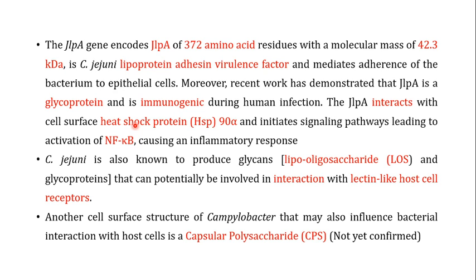Another important virulence factor present in Campylobacter jejuni is JlpA. The jlpA gene encodes a JlpA protein which is 372 amino acid residues long and has a molecular weight of 42.3 kilodaltons. JlpA is a lipoprotein adhesin virulence factor responsible for mediating adherence of the bacterium to epithelial cells. More recently, it has been demonstrated that JlpA is a glycoprotein in nature and is immunogenic during human infection.